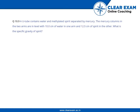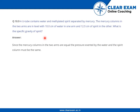A U-tube console contains water and methylated spirit separated by mercury. The mercury columns in the two arms are level, with 10 centimeters of water in one arm and 12.5 centimeters of spirit in the other. What is the specific gravity of spirit?